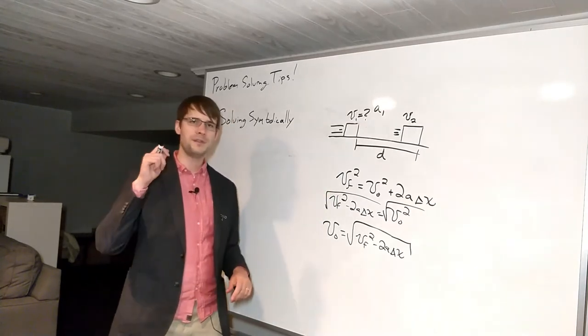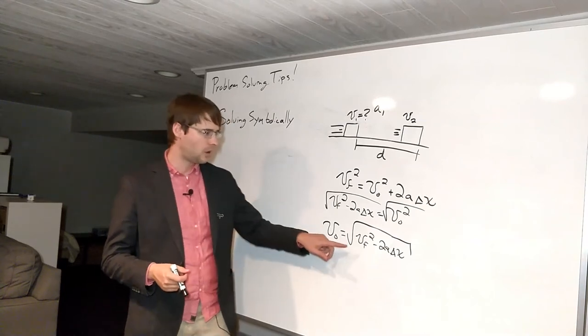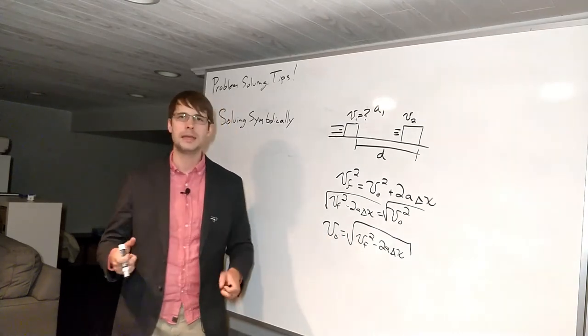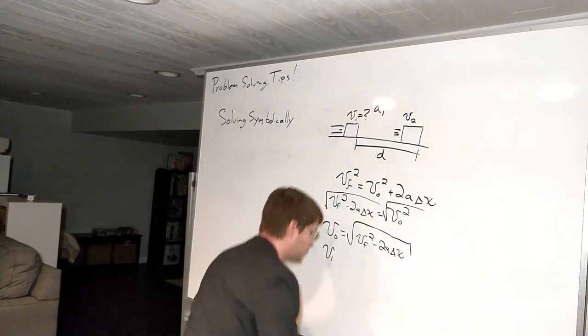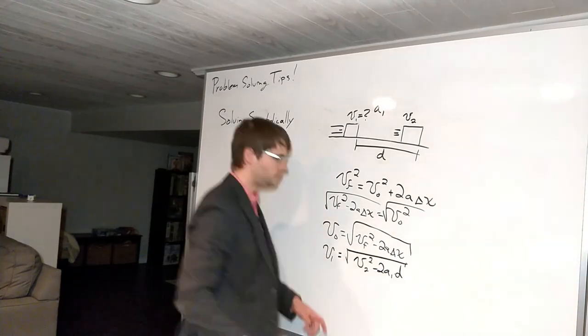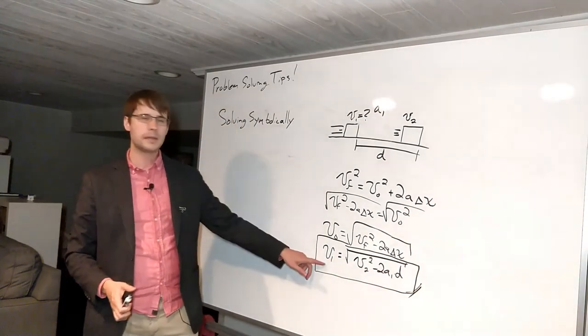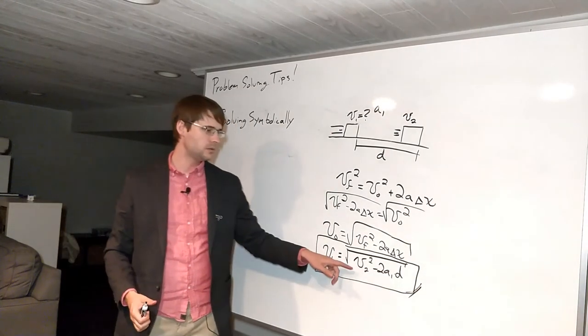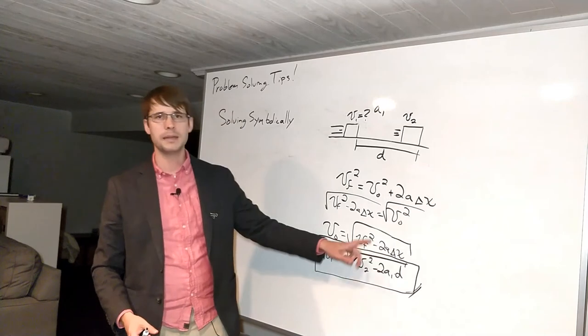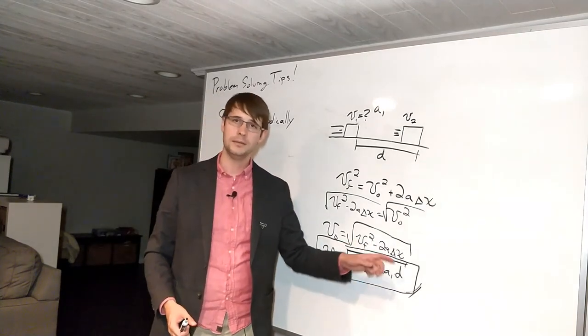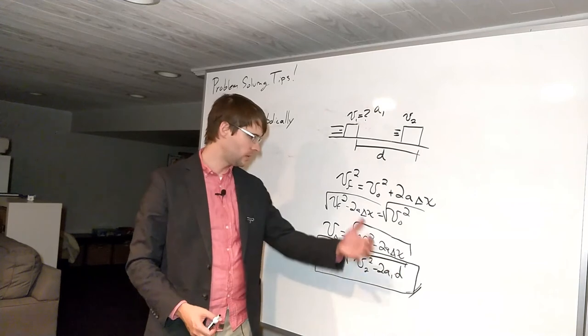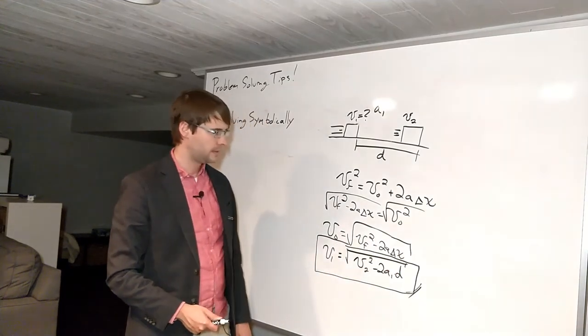If we wanted to figure out v1 we have to go in and replace all of these with their names in the problem. So here we go, here's our answer. We get that the initial velocity v1 is equal to the square root of v2 squared minus 2 a1 d, and that's the square root of all of that on that side.